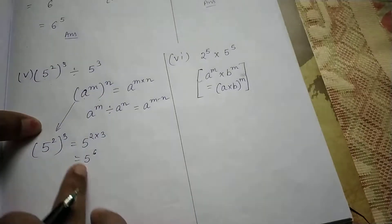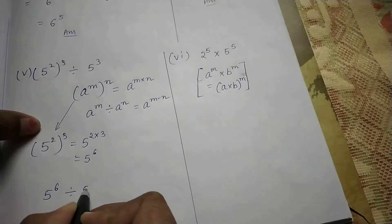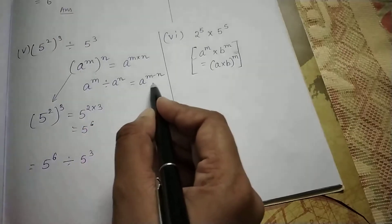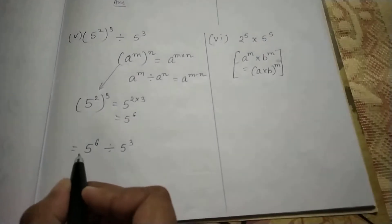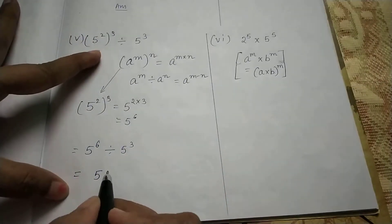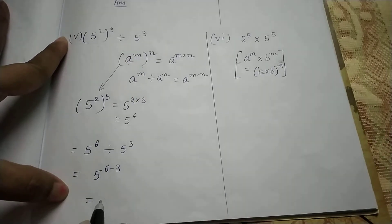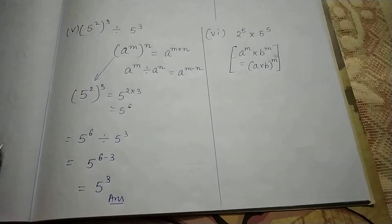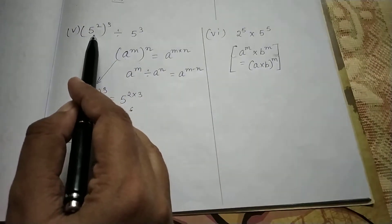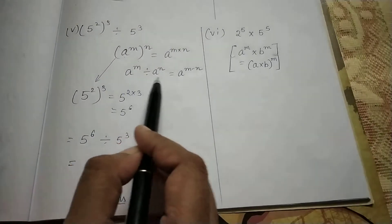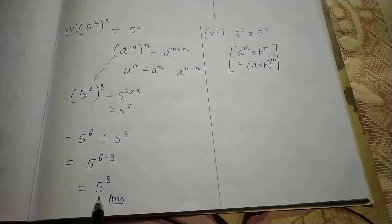Now we have 5 to the power 6 divide 5 to the power 3. The base is same and the powers are different, so apply the division law: subtract the powers — 6 minus 3 gives 3. So the answer is 5 to the power 3. We applied two laws: the power-of-a-power law first for the bracket portion, then the division law to get the final answer.